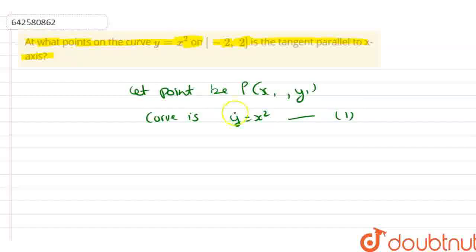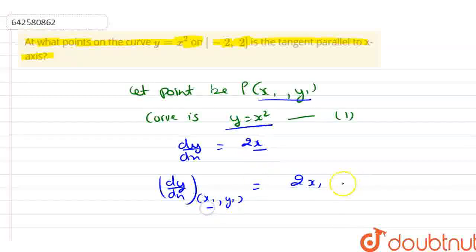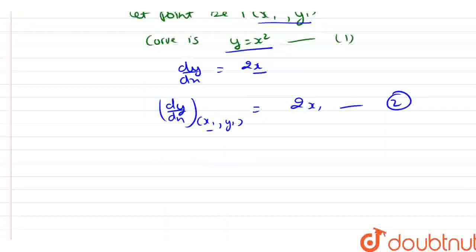Now, differentiate both of the sides with respect to x. So, here we have dy/dx equals 2x. Now, here we have dy/dx, here put the values of point, this point. So, here we have (x1, y1) and this will be equal to 2x1. Here we put the value of x as x1. So, let's say this is our point number 2.